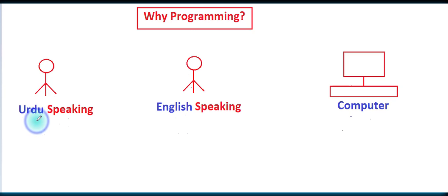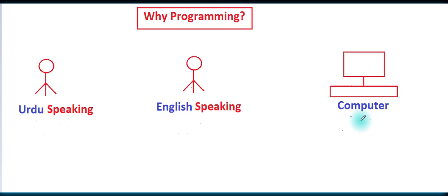اردو speaking بندے نے زندہ بات کہا کیونکہ اسے اردو سمجھ آتی ہے اور میں نے اسے اردو میں سمجھایا تھا۔ لیکن computer کو اردو سمجھ نہیں آتی، تو پھر میں نے دوبارہ انگلیش speaking بندے کو انگلیش میں سمجھایا: brother you have to say زندہ بات when I'll say Pakistan — تب جا کے اس کو سمجھ آئی۔ Computer کو بھی انگلیش میں سمجھایا: hi computer, you have to say زندہ بات when I'll say Pakistan — لیکن پھر بھی computer نے کچھ نہیں کیا۔ وجہ یہ ہے کہ computer کو نہ اردو آتی ہے نہ انگلیش آتی ہے۔ Computer کو programming آتی ہے۔